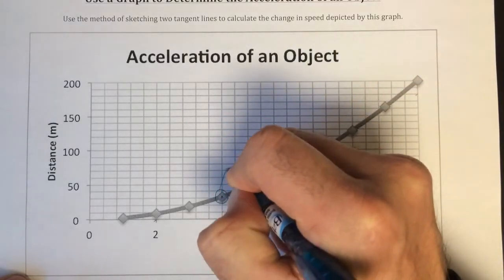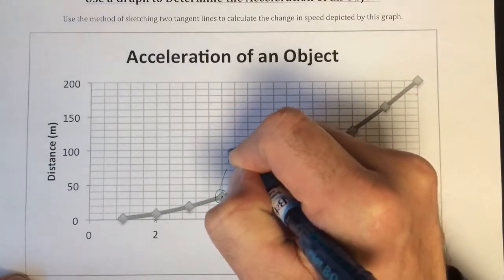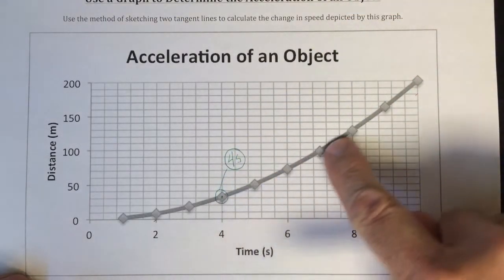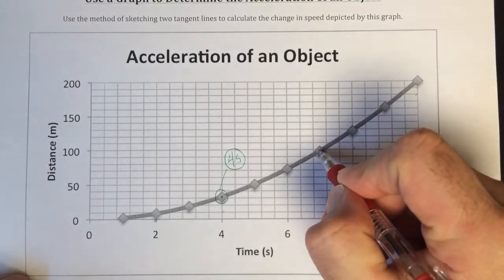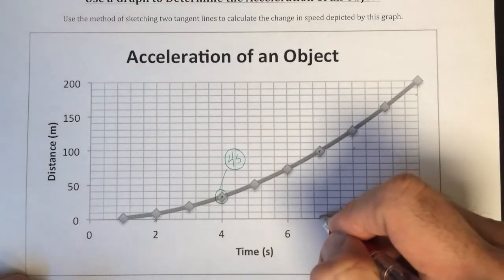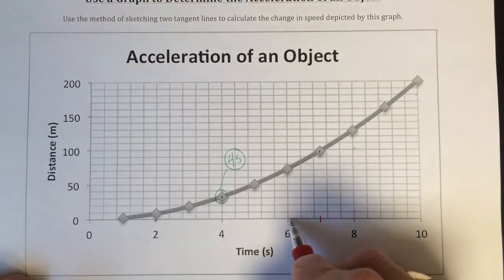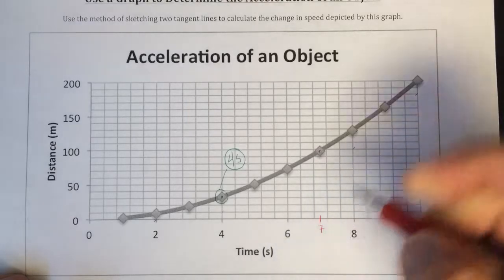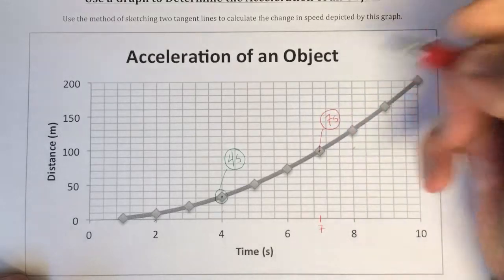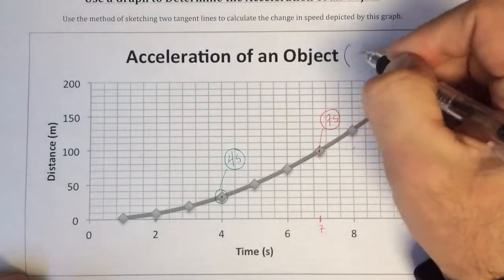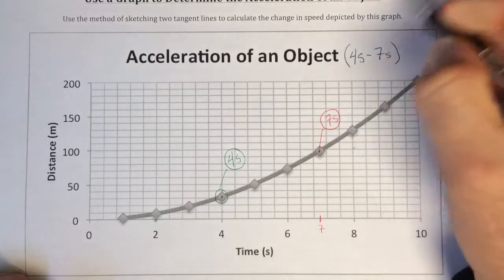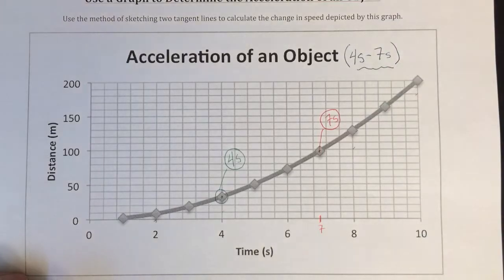And that is at four seconds. Now the next point I'm going to do further along the line. Let's pick this one right here. I'm using different colors to help you tell the difference. And that looks like it falls at this point, which is in between six and eight. That is seven seconds right there. So the acceleration of the object will be between four seconds and seven seconds.